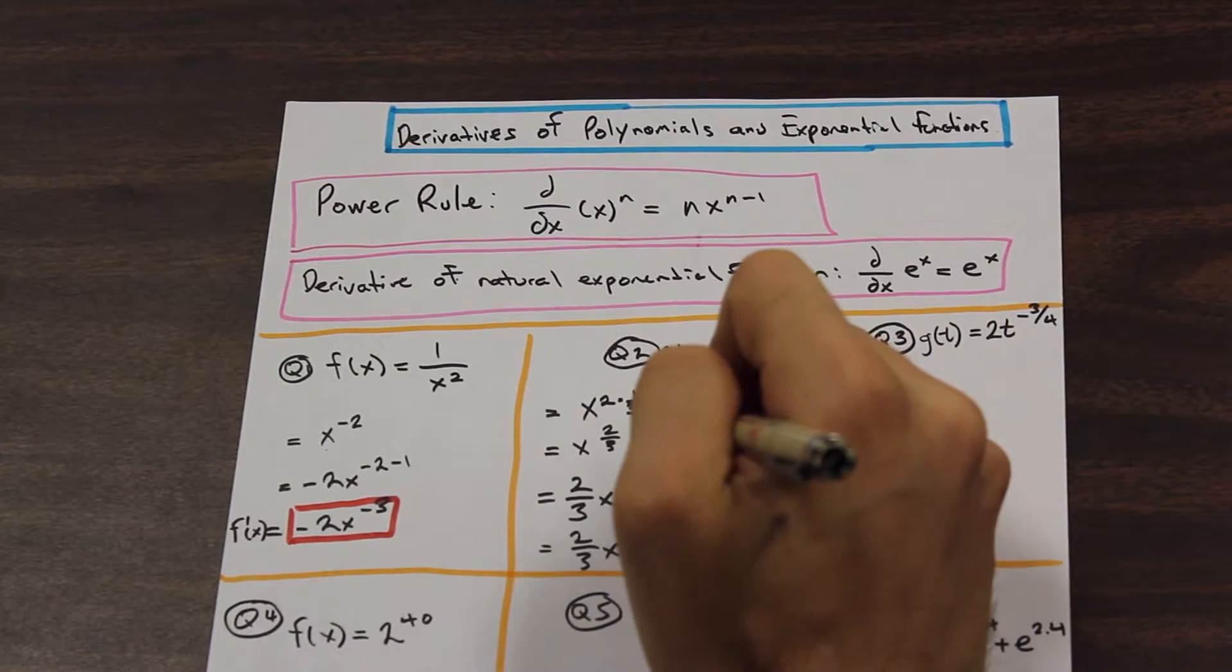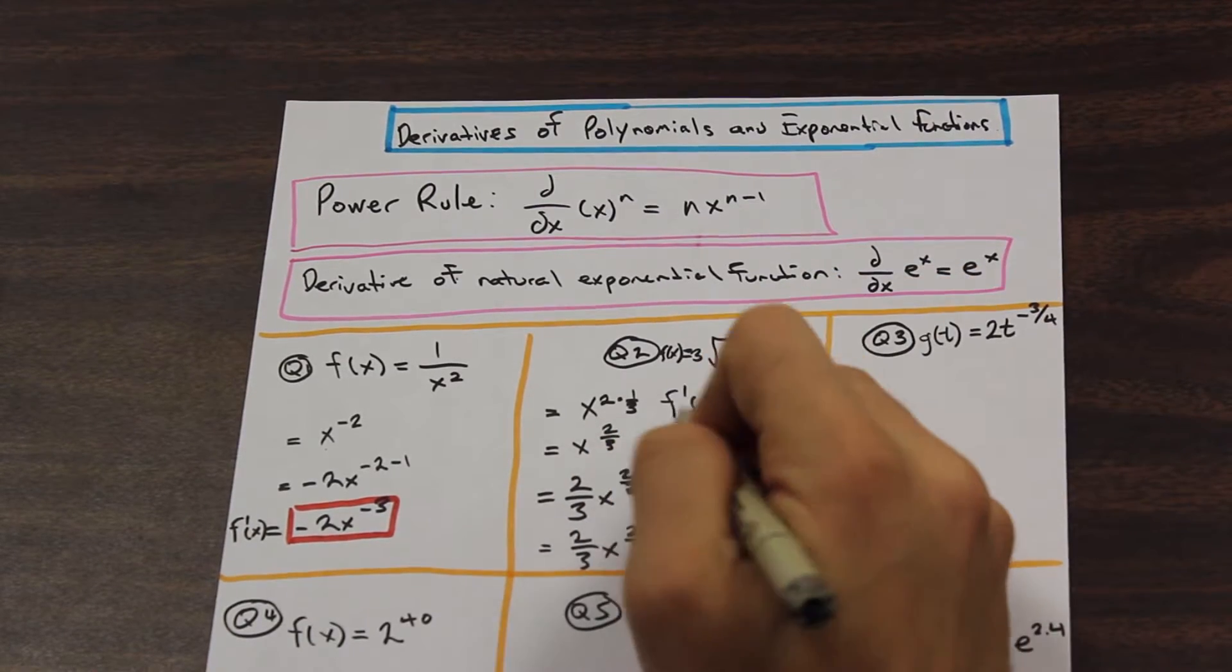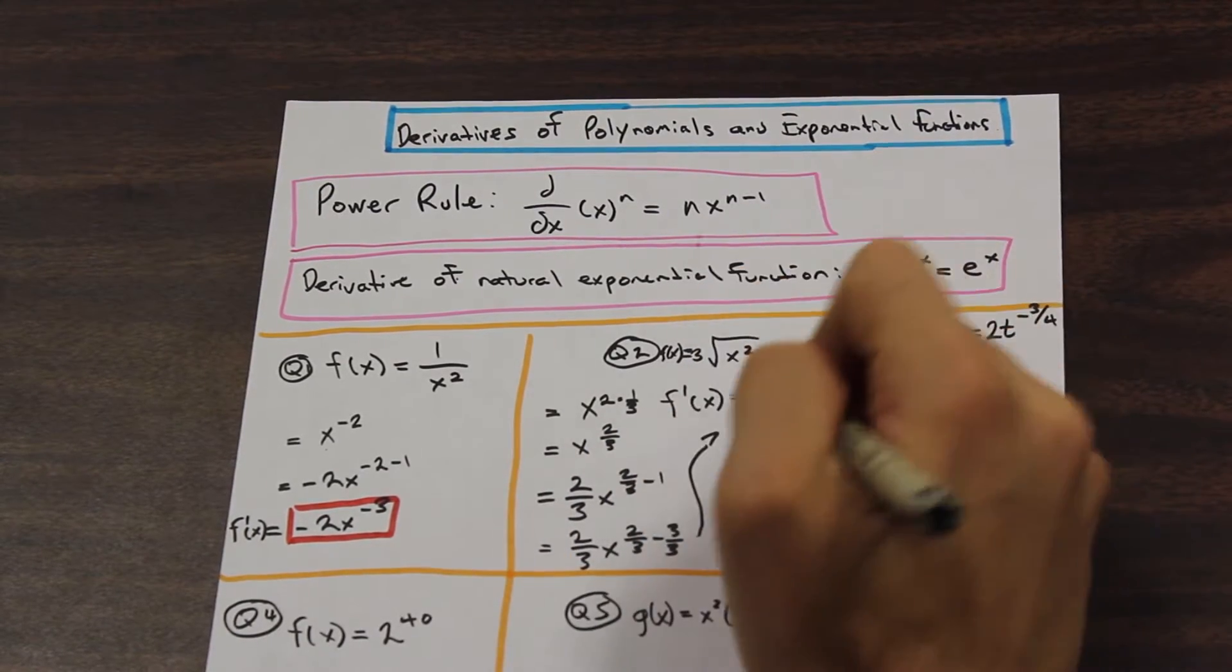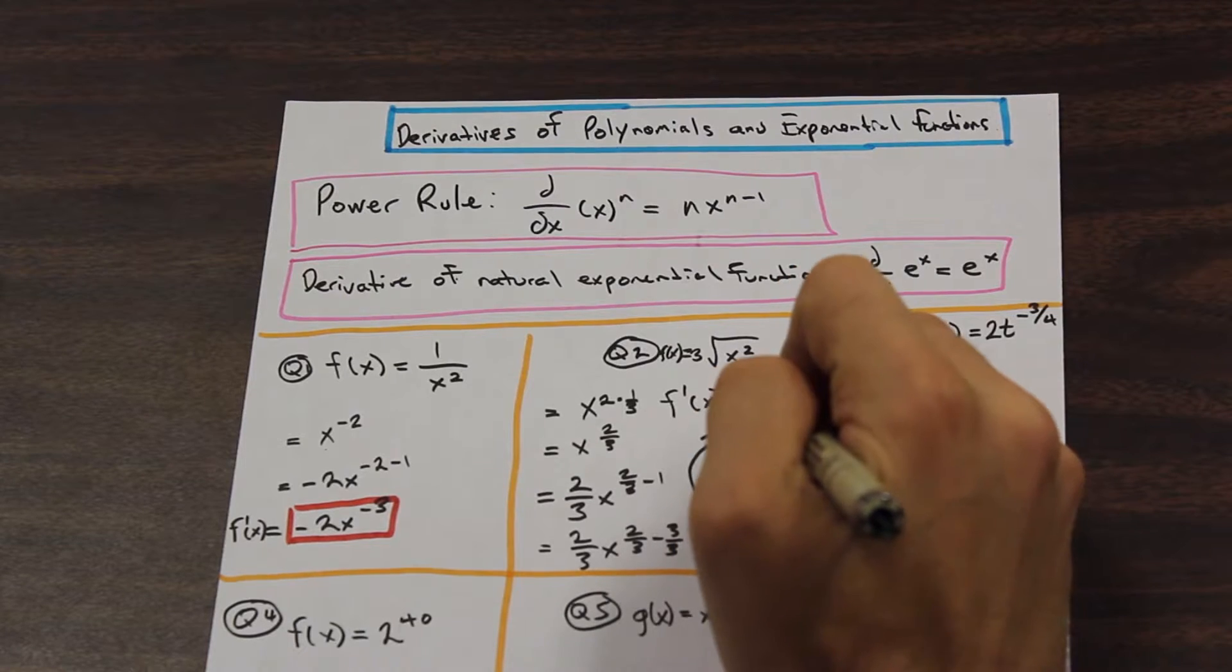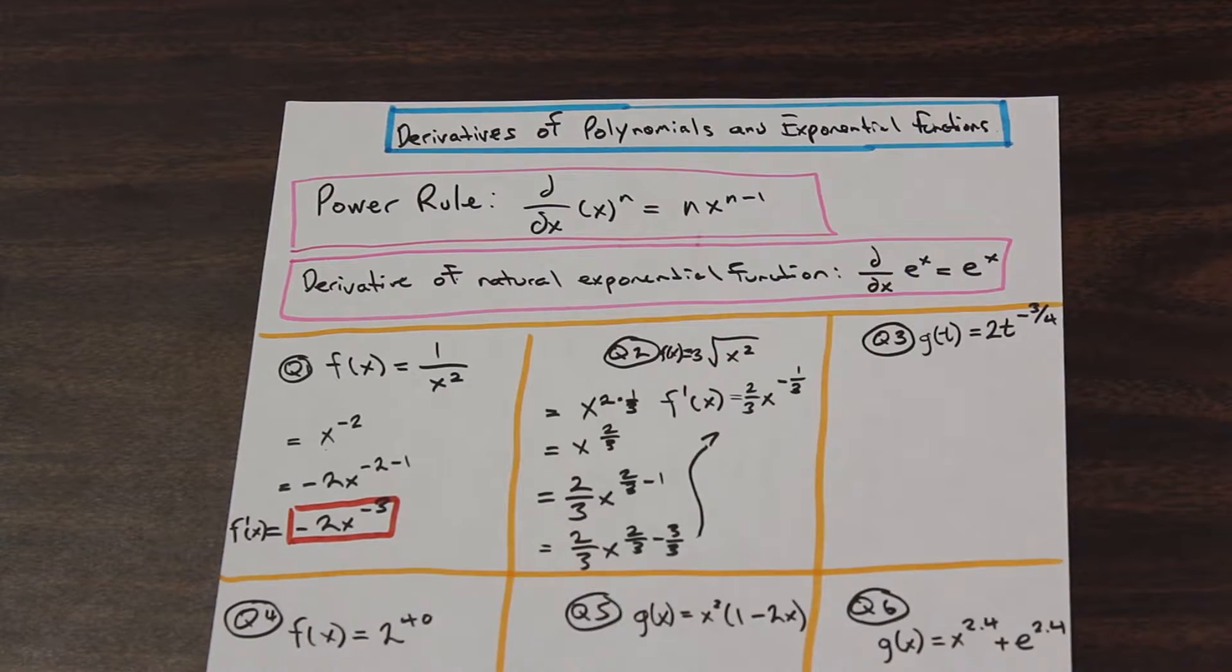And we'll bring that back up here. So we say that our f prime of x, or the derivative of f of x, is equal to 2 over 3 x to the power of negative 1 over 3. And that is the second question solved.